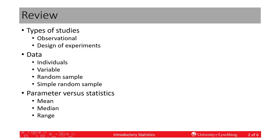First let's review what we did last time. We talked about two types of studies. There are observational studies where the results are measured or recorded without any influence or interference. Then we have designs of experiments where subject matter experts and statisticians usually work together to set up a controlled experiment with different inputs in order to verify the change in outputs, and thus they can prove or disprove cause and effect.